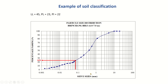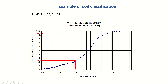We also need the percentage passing sieve number 4. The sieve size is 4.75 millimeter. On the log scale, we locate 4.75 and read off the percentage passing, which is about 95%.